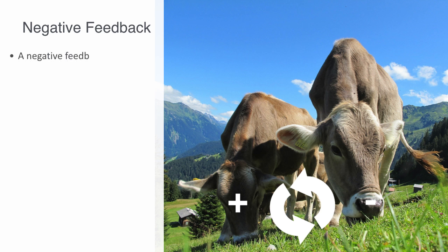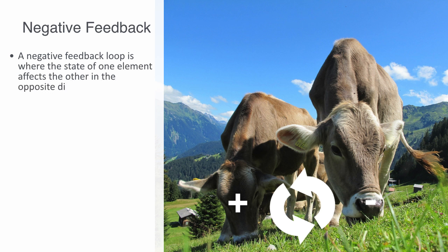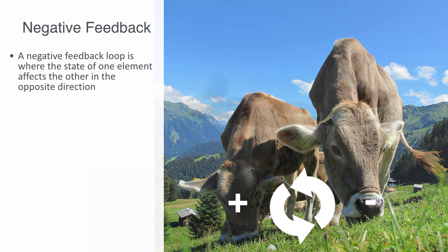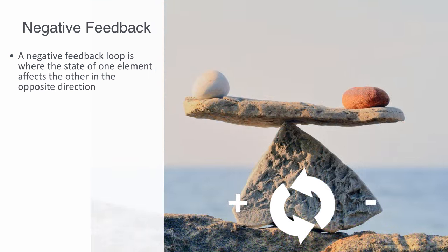A negative feedback loop is where the state of one element affects the other in the opposite direction, with the net result of this being a stable system where different forces are counterbalancing each other out, creating some kind of equilibrium.